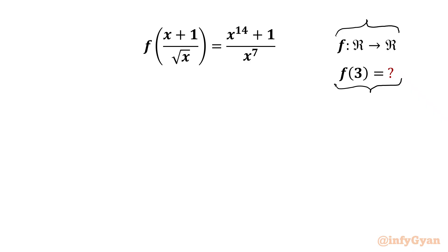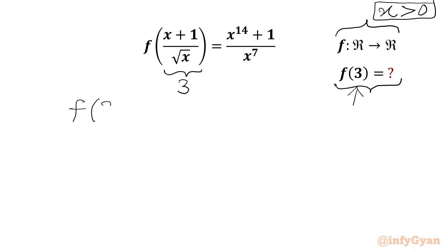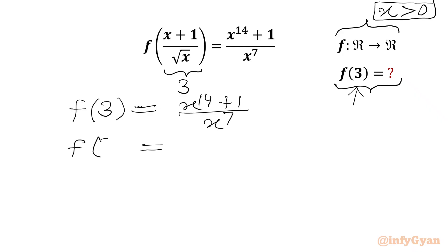As we have x real, we can write that square root x must be positive — the radicand must be positive — so x must be positive. Now we have to calculate f(3). We can set the bracket equal to 3 so that on the LHS we get f(3), and the RHS would be x¹⁴ + 1/x⁷. Splitting numerator with respect to denominator, f(3) = x⁷ + 1/x⁷, which is the expression we are going to evaluate.